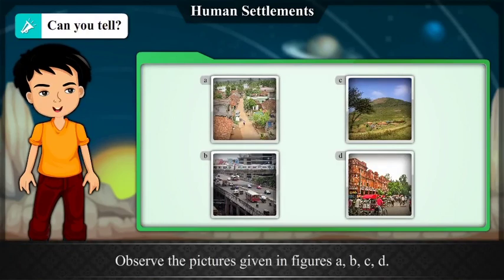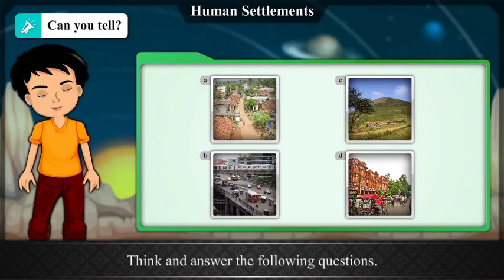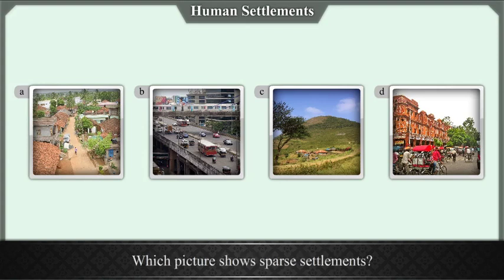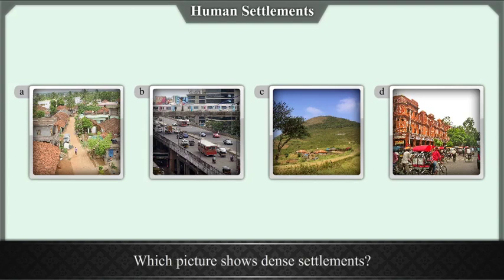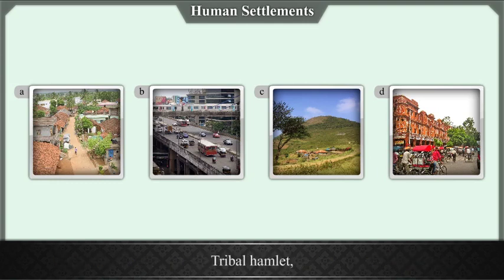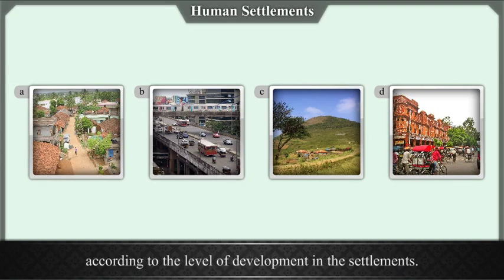Observe the pictures given in figures A, B, C, D. Think and answer: What can you see in the pictures? What are the familiar features? Which picture shows past settlements? Which shows agriculture? Which shows dense settlements? Which shows high-rise buildings? Assign a suitable name to each picture: rural settlement, tribal hamlet, town, or city.